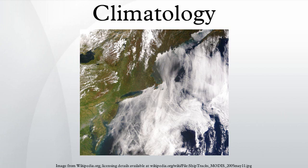The Madden-Julian Oscillation is an equatorial travelling pattern of anomalous rainfall that is planetary in scale. It is characterised by an eastward progression of large regions of both enhanced and suppressed tropical rainfall, observed mainly over the Indian and Pacific Oceans. The anomalous rainfall is usually first evident over the western Indian Ocean, and remains evident as it propagates over the very warm ocean waters of the western and central tropical Pacific. This pattern of tropical rainfall then generally becomes very nondescript as it moves over the cooler ocean waters of the eastern Pacific but reappears over the tropical Atlantic and Indian Oceans. The wet phase of enhanced convection and precipitation is followed by a dry phase where convection is suppressed.